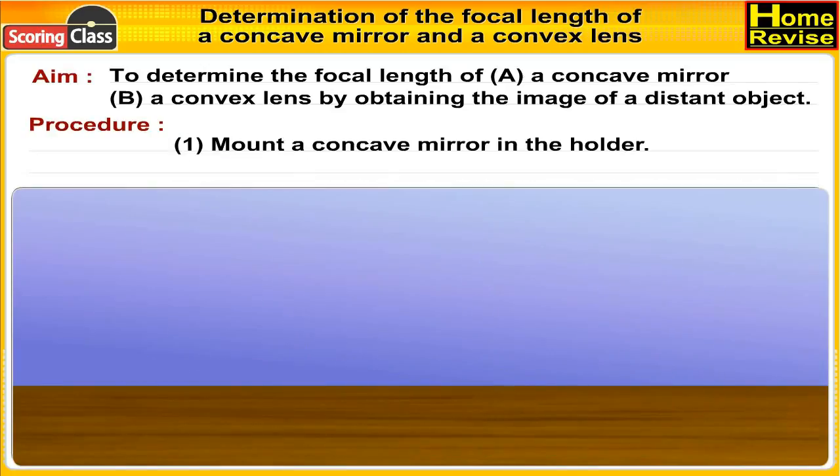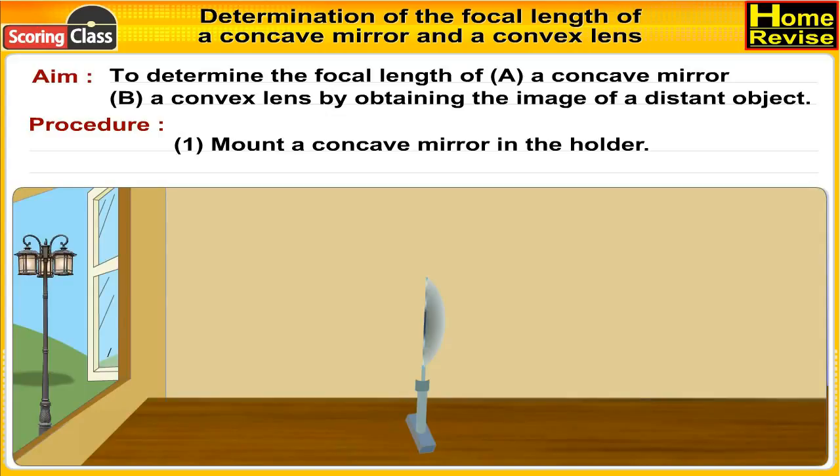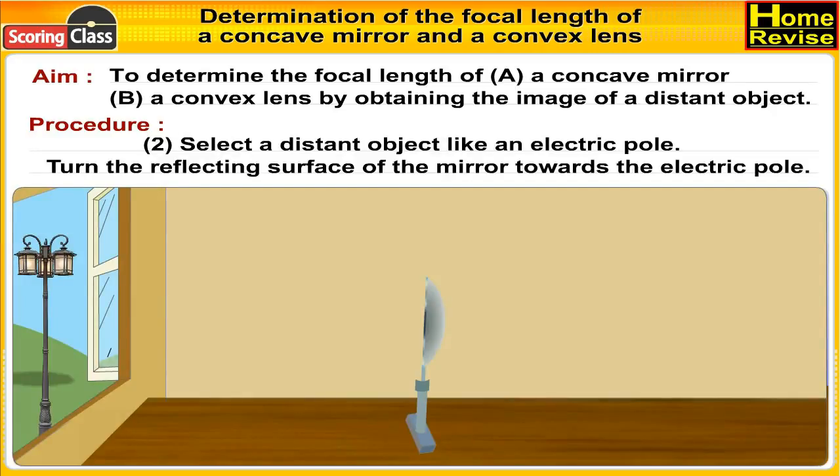Procedure: First, mount a concave mirror in the holder. Select a distant object like an electric pole. Turn the reflecting surface of the mirror towards the electric pole.